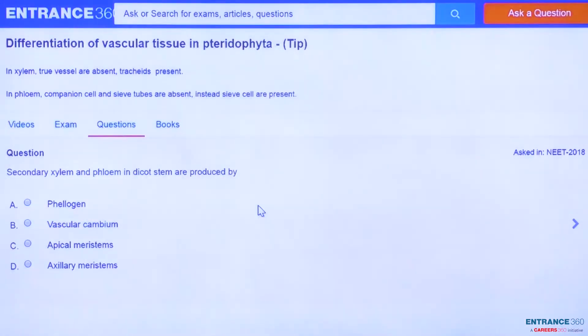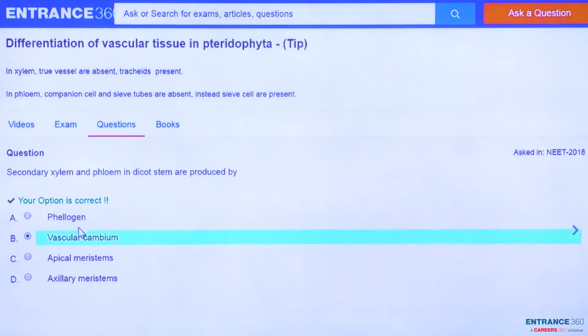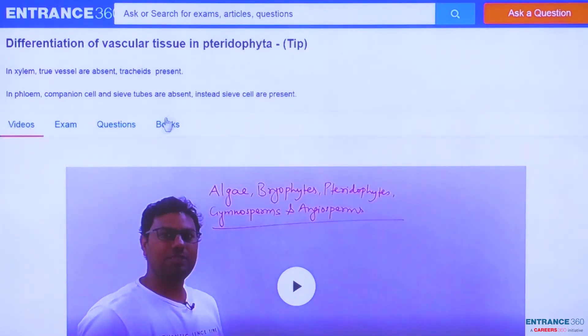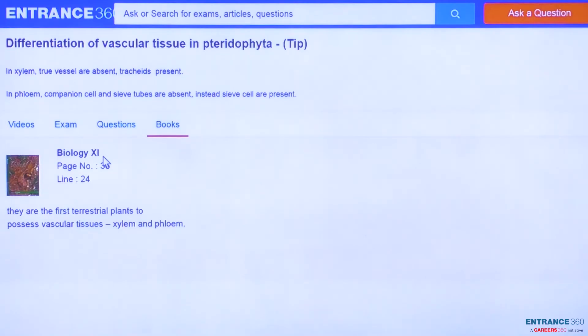After understanding this concept, you can see the correct option is vascular cambium. To understand better, watch these videos. Go to the NCERT Biology book, directly to line 24 of page 36 where you'll find the whole concept. To know more, stay tuned. Thank you.